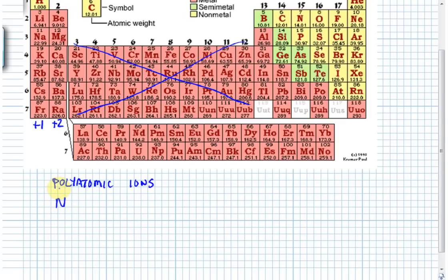Let's start with the ammonium ion. Every polyatomic ion has a name you need to know. Ammonium has the formula NH₄⁺ — a nitrogen and four hydrogens covalently bonded together — and it carries a plus 1 charge. From our perspective, ammonium behaves exactly like a sodium ion: both have a plus 1 charge. Ammonium is the most common positive polyatomic ion — it's the only positive one you need to know.